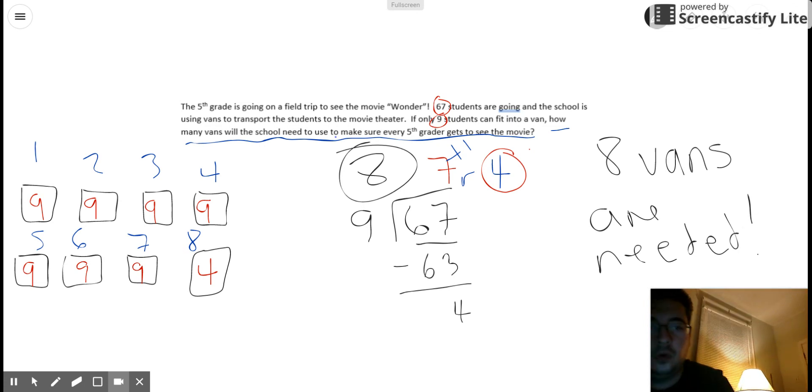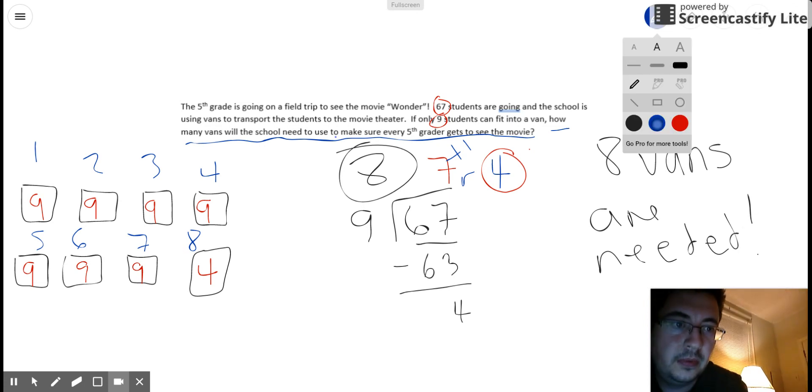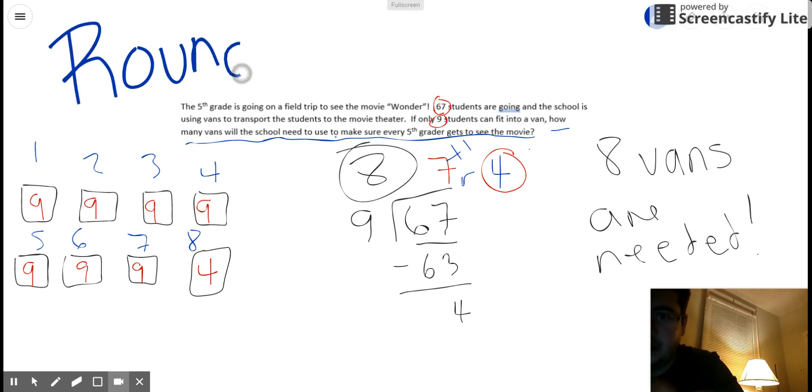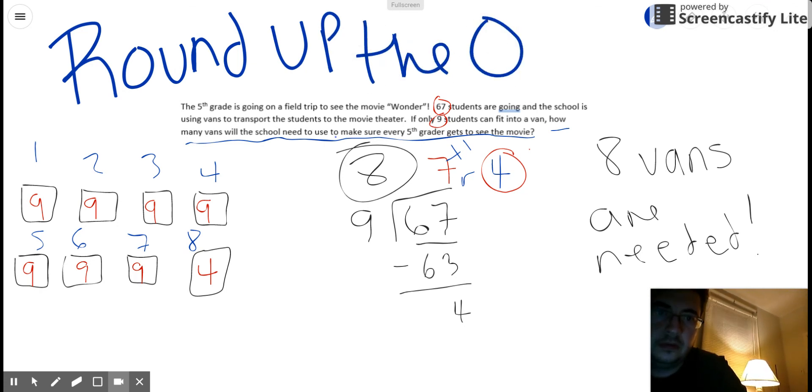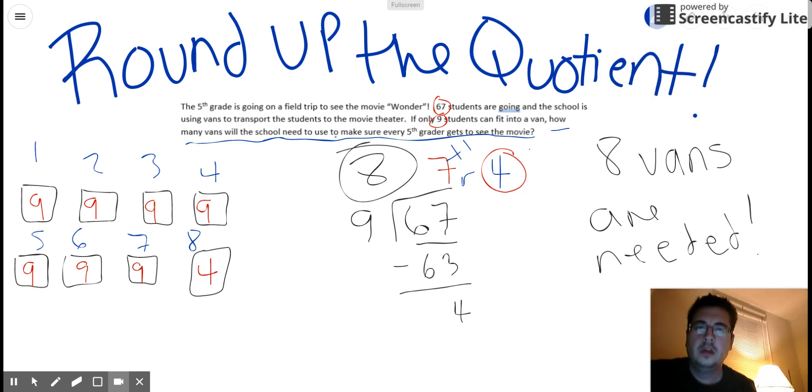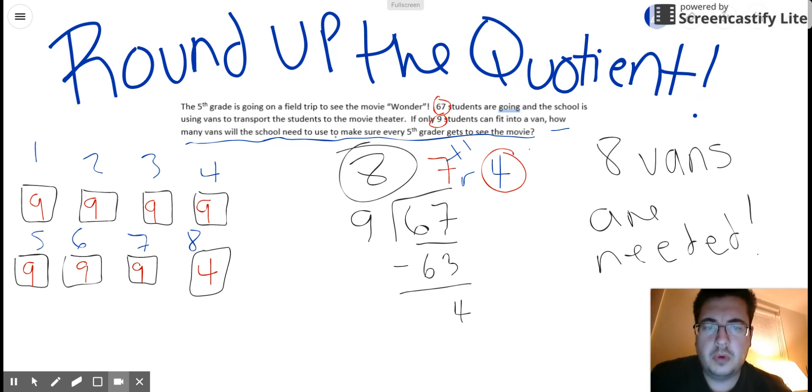And this whole story problem, this is an example of a division problem where you need to round up. Where you need to round up the quotient. Round up the quotient. All right. So hopefully this helps you guys understand a situation where rounding up the quotient is needed.